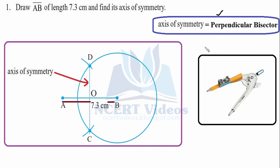We will place the needle of the compass at B and draw a circle with radius greater than half of AB. Now with the same radius, place the needle at A and cut this circle at two points. We got B and C as two points.